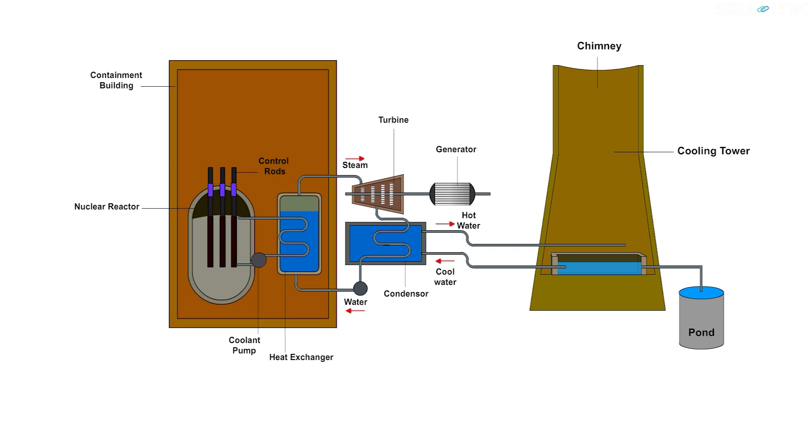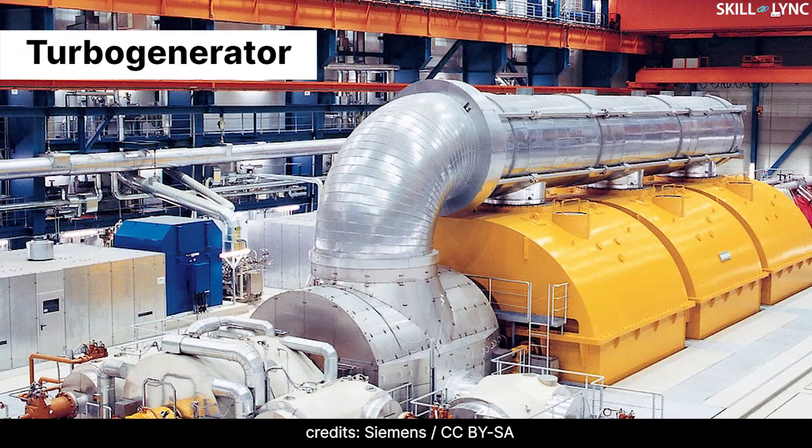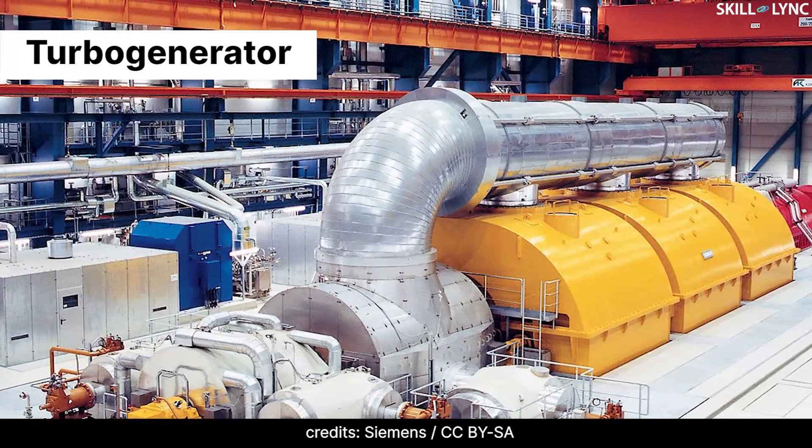The nuclear fission taking place in the reactor core is a chain reaction. It is controlled by means of control rods that absorb neutrons. By adjusting the position of control rods, the rate of reaction can be controlled. In a nuclear reactor, the heat produced is used to drive a turbine which in turn drives a generator.